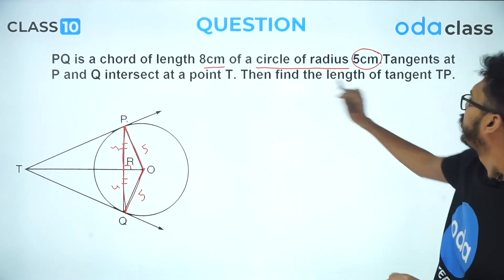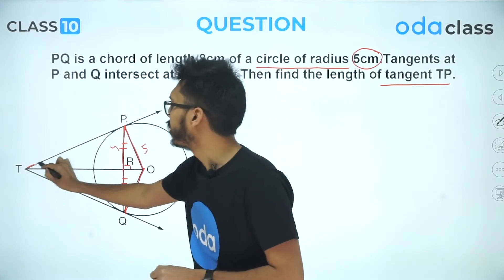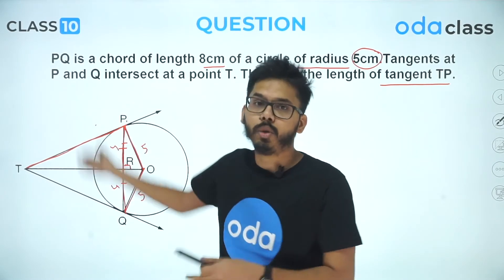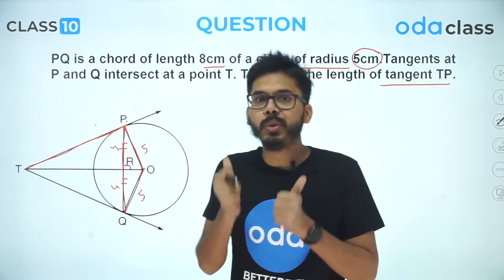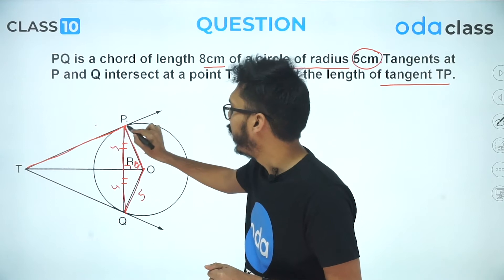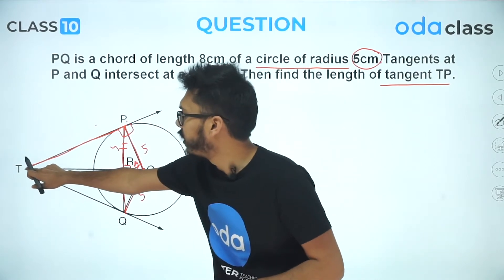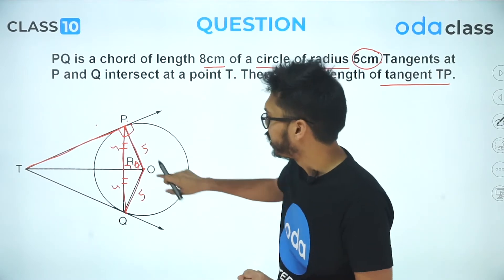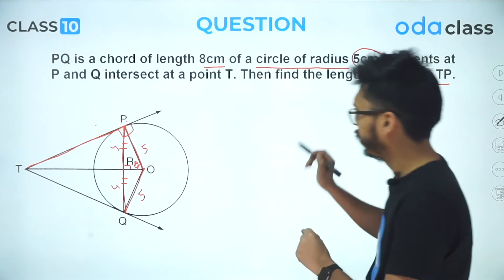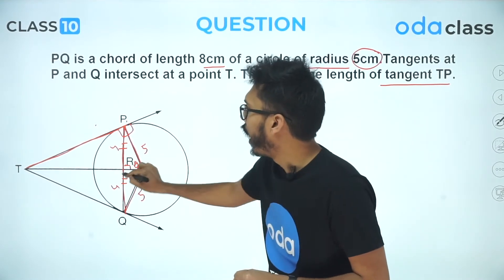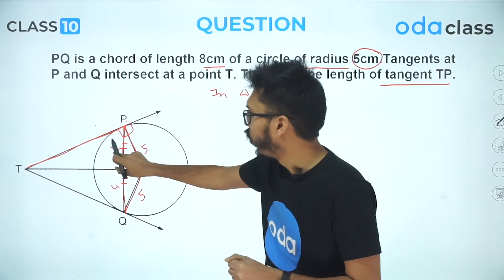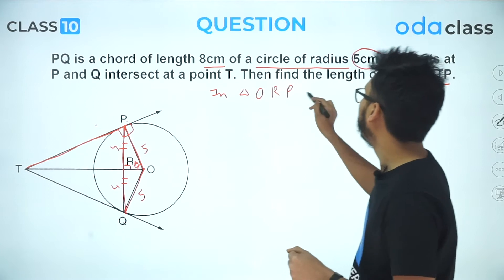We are supposed to find the length of tangent TP. Instead of the conventional method of assuming lengths x and y, I'm going to give you an easier way using trigonometry. I'll assume this angle as theta. We have two right angle triangles: triangle TPO and triangle OPR. In triangle ORP, since the perpendicular is 4 and hypotenuse is 5, I can write sin theta as 4/5.